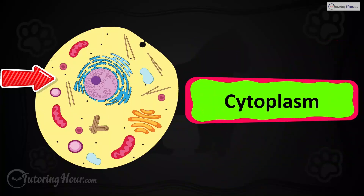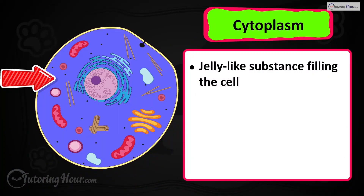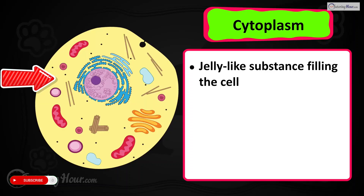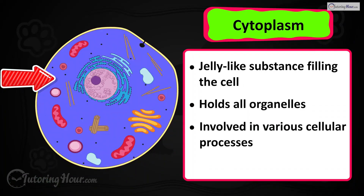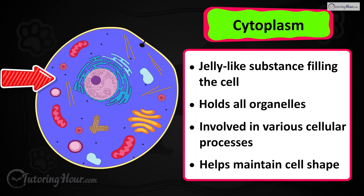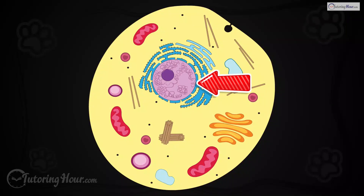The answer is the cytoplasm, a jelly-like substance that fills the cell excluding the nuclear membrane and holds all the organelles. It is involved in various cellular processes and helps maintain the cell's shape.